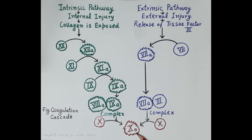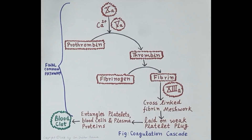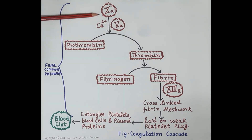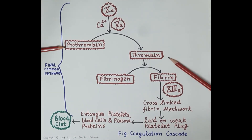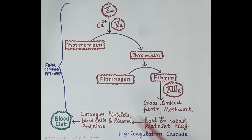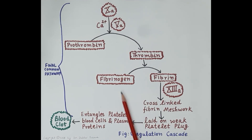Both the intrinsic and extrinsic pathways activate clotting factor 10 to 10a, and this is followed by the common pathway — a pathway shared by both. Activated clotting factor 10a, along with clotting factor 5a and calcium, activates prothrombin to thrombin. Prothrombin is clotting factor 2, and it is activated to thrombin.